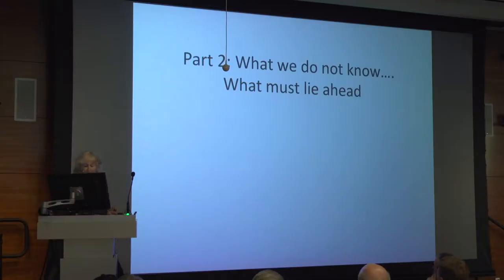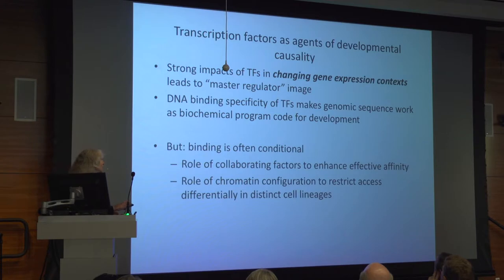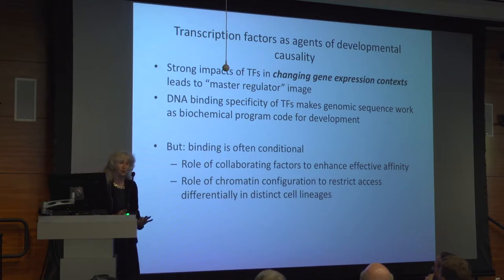The point of this talk, though, is what we don't know and what lies ahead. One of the sorrows I have is that many people have sort of forgotten that there's anything we don't know about this — but there's a lot that we don't know. I would argue that the major predictive gold is yet to be mined in this system. Transcription factors are agents of developmental causality, but if you look at the way a transcription factor binds to the genome and associate that with the activity of genes in the vicinity, you find quite a bit of complications.